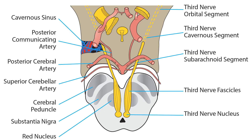The fascicles of the third nerve consist of axons that emerge from the nucleus. They descend ventrally within the midbrain through the decussation of the superior cerebellar peduncles, red nucleus, substantia nigra, and medial part of the cerebral peduncle. As they exit the brainstem, the fascicles gather to form a single nerve entering the interpeduncular cistern. Damage to third nerve fascicles often produces a partial palsy, and since the fascicles traverse important descending neural pathways, a lesion here often causes ataxia or contralateral hemiparesis.